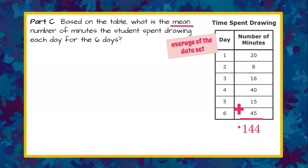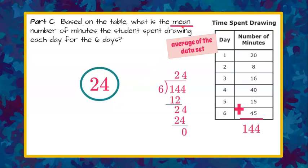Now that we know the sum of the six numbers in our data set we need to find the average so we're going to take that sum and divide it by the number of data items that we have. So we have data for six days so we're going to take our sum of the data 144 and divide it by 6. 6 goes into 14 twice. 2 times 6 is 12. 14 subtract 12 is 2. I'm going to bring down our 4. 6 goes into 24 4 times. 4 times 6 is 24 and we have a remainder of 0. So we can conclude that the average or mean number of minutes the student spent drawing each day for 6 days is 24.